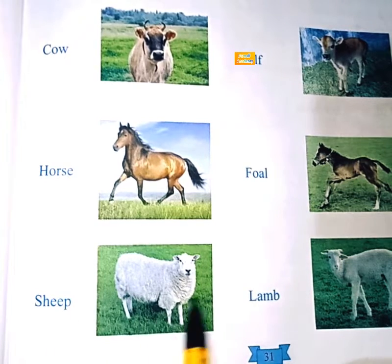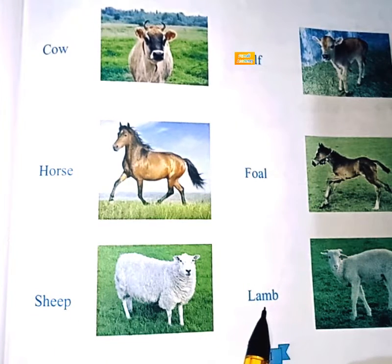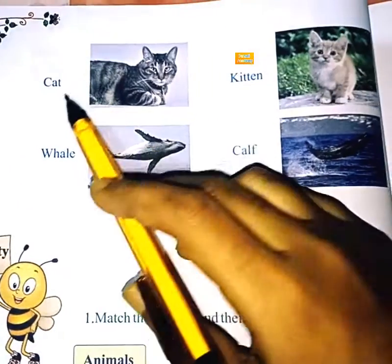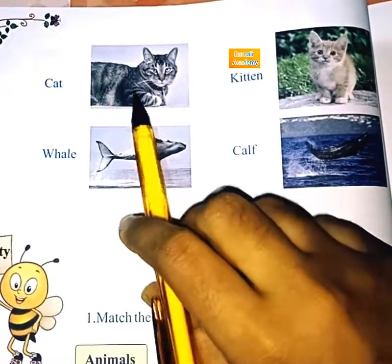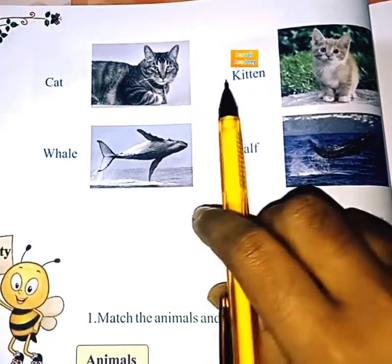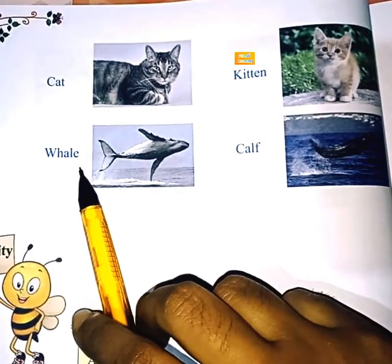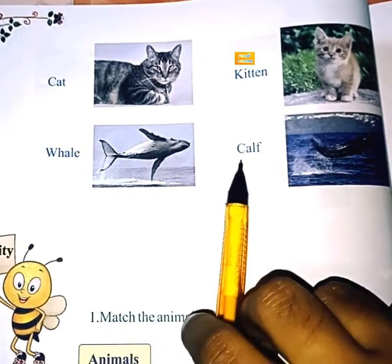Sheep — baby lamb. Cat — kitten. Our baby means calf.